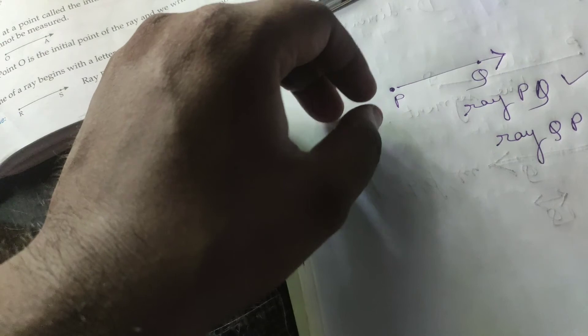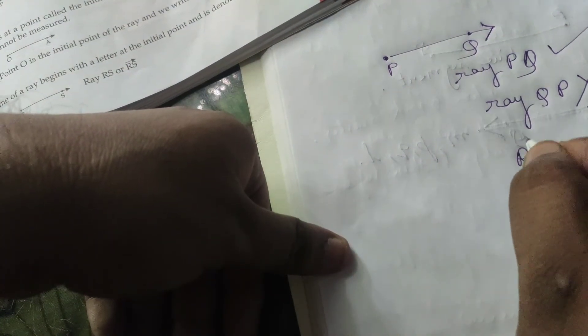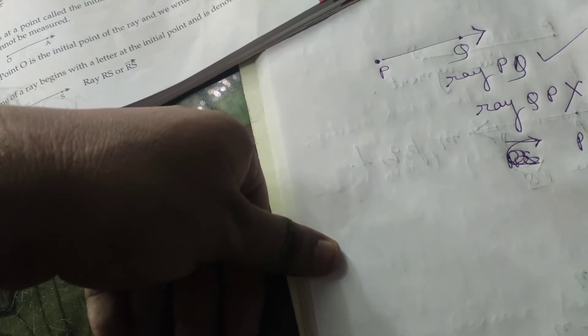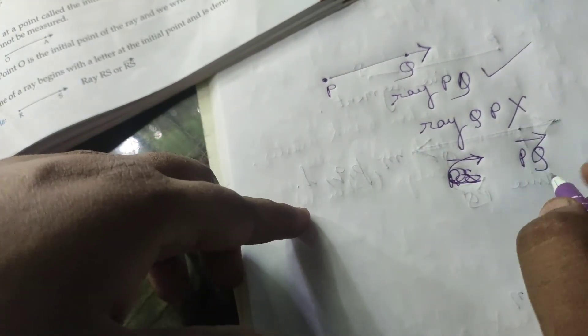For naming a ray, we look at which side it ends. The endpoint comes first in the name. For example, if the endpoint is P and the ray continues toward Q, we write it as ray PQ and give the ray symbol on top. Ray QP would be wrong.